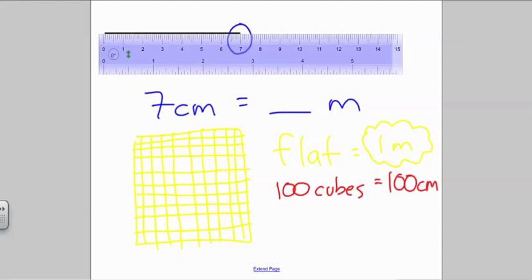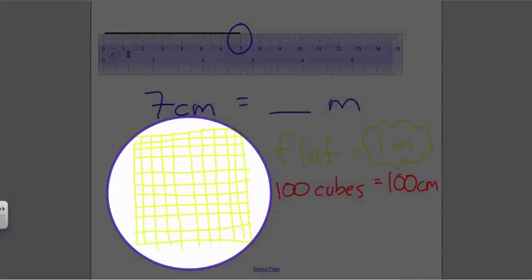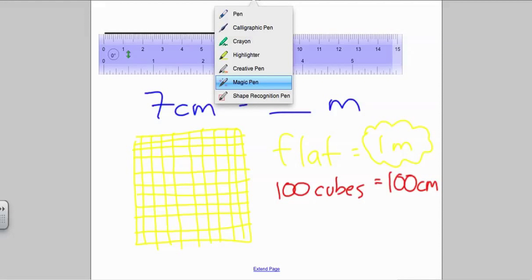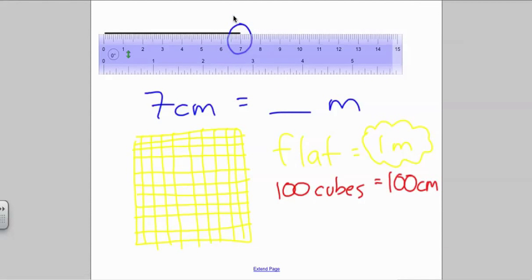When we visualize this, we can envision this flat and say that this entire flat represents one meter. But our measurement, when we measured this line, was 7 centimeters long. If each cube represents one centimeter, then we should fill in 7 centimeters.